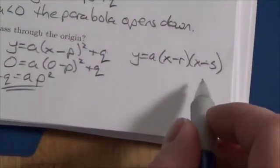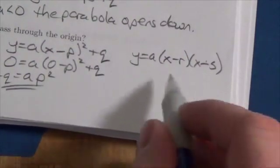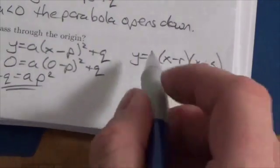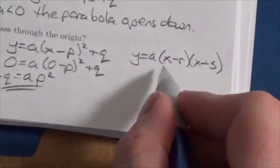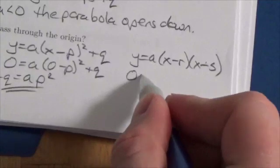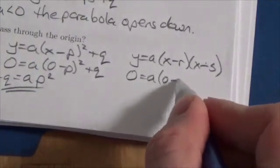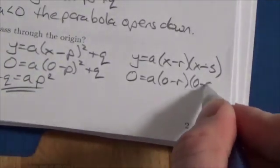and actually when I look at this, this isn't going to come out exactly the way I want it, but if this is going to go through the origin, that would be 0 equals A times (0 minus R) times (0 minus S).